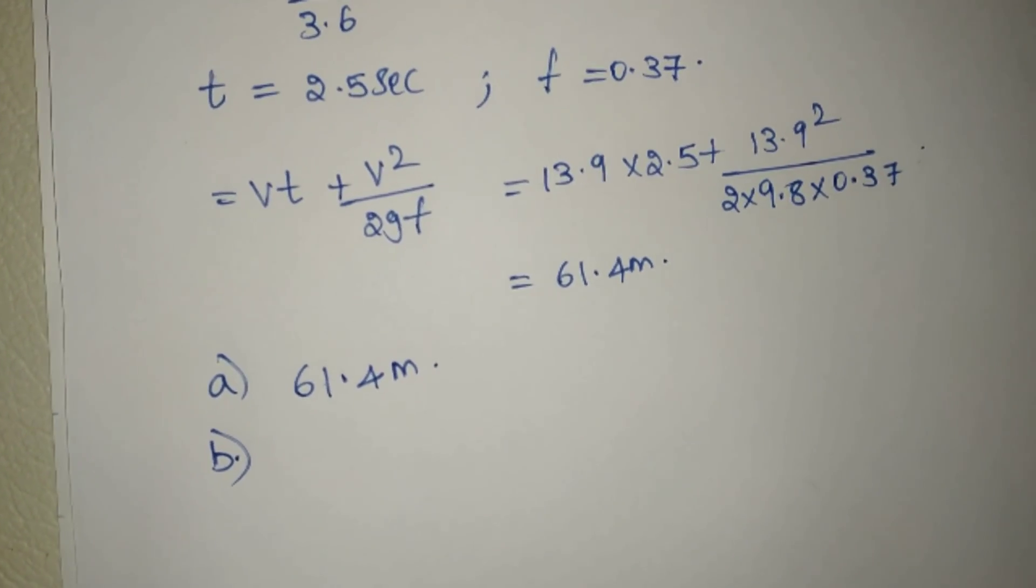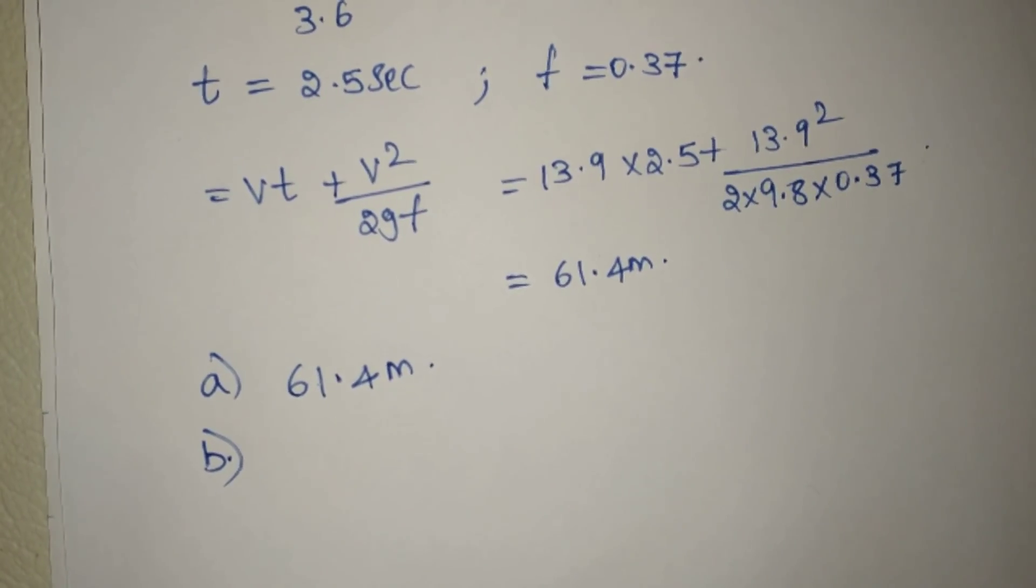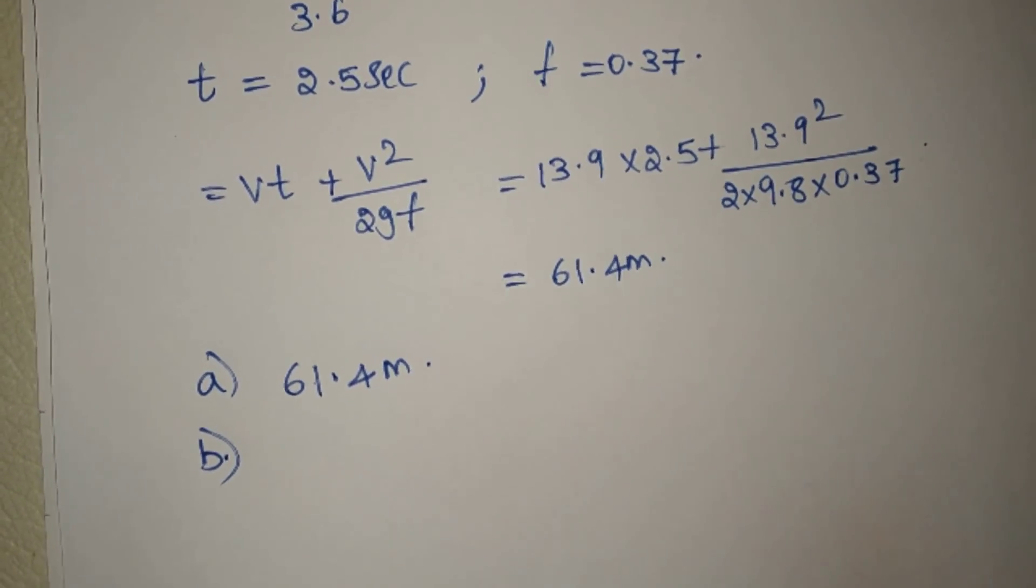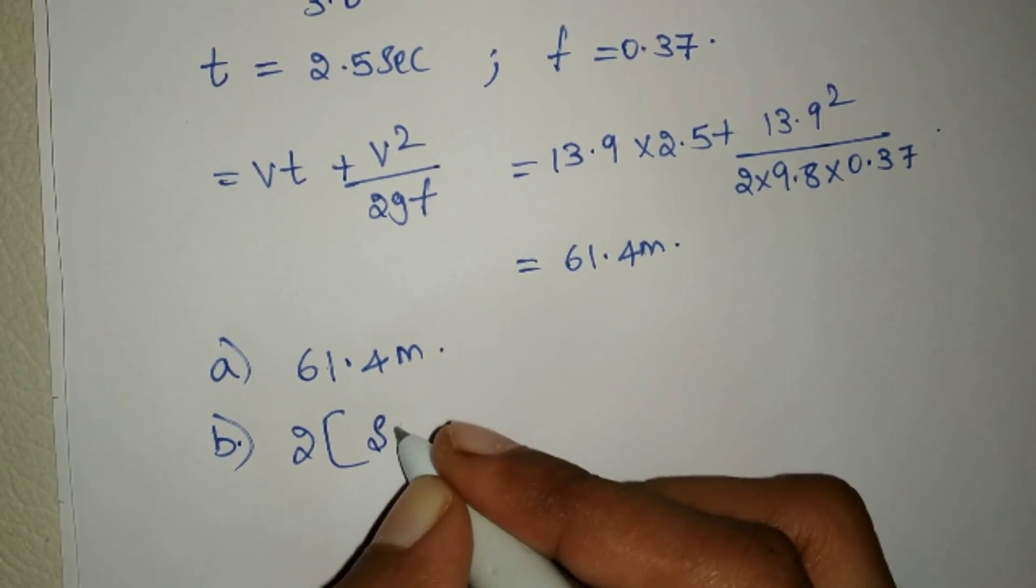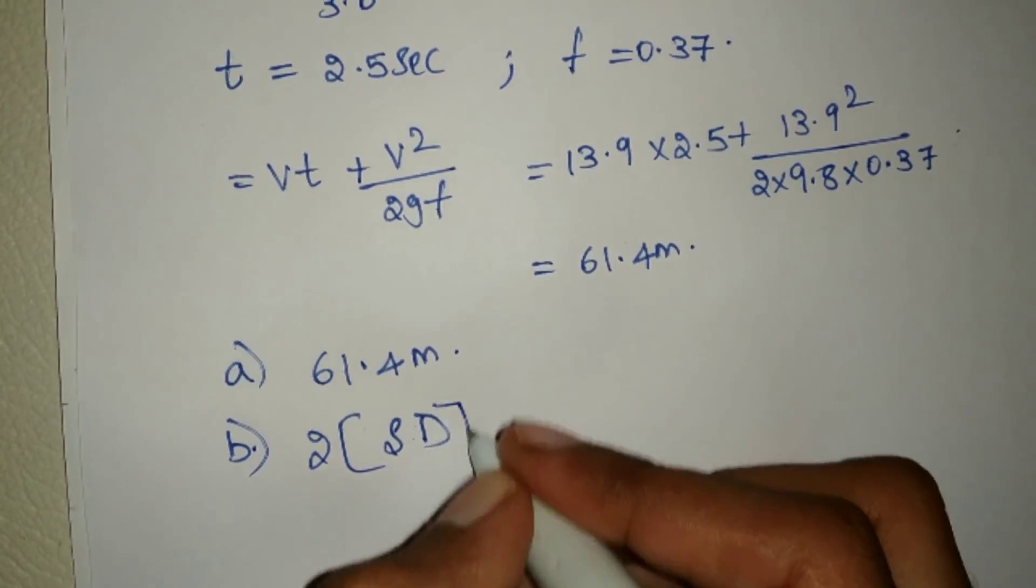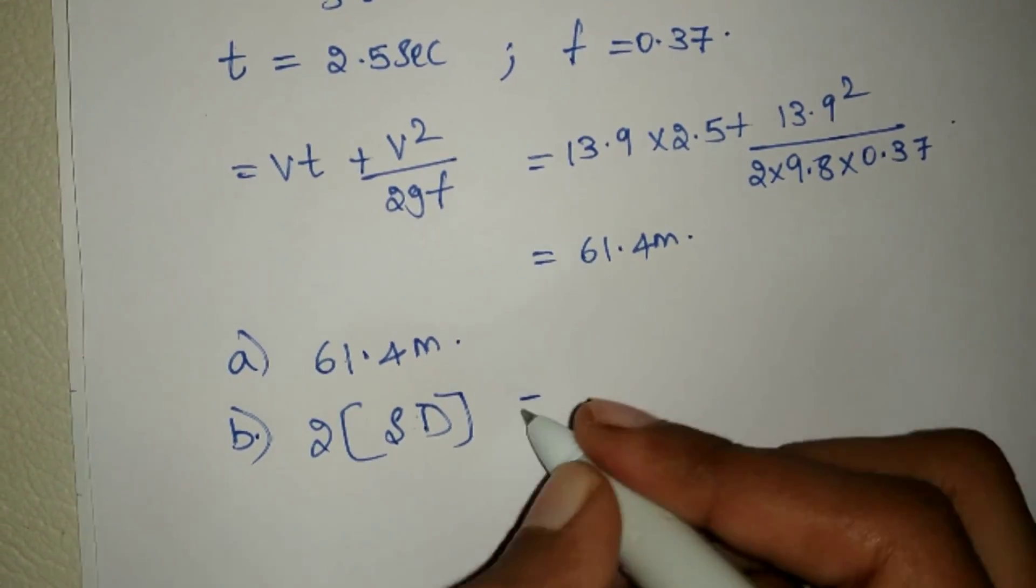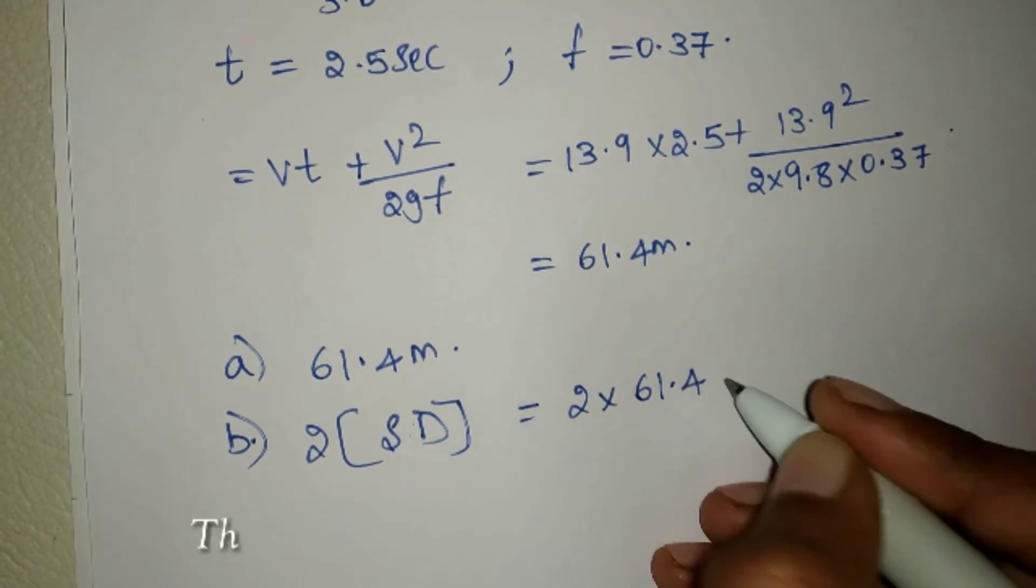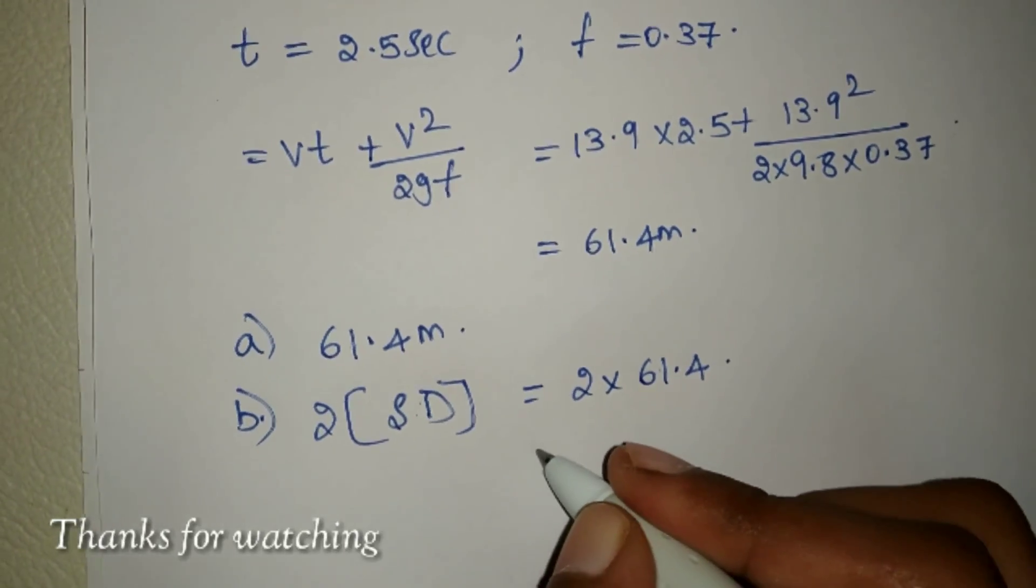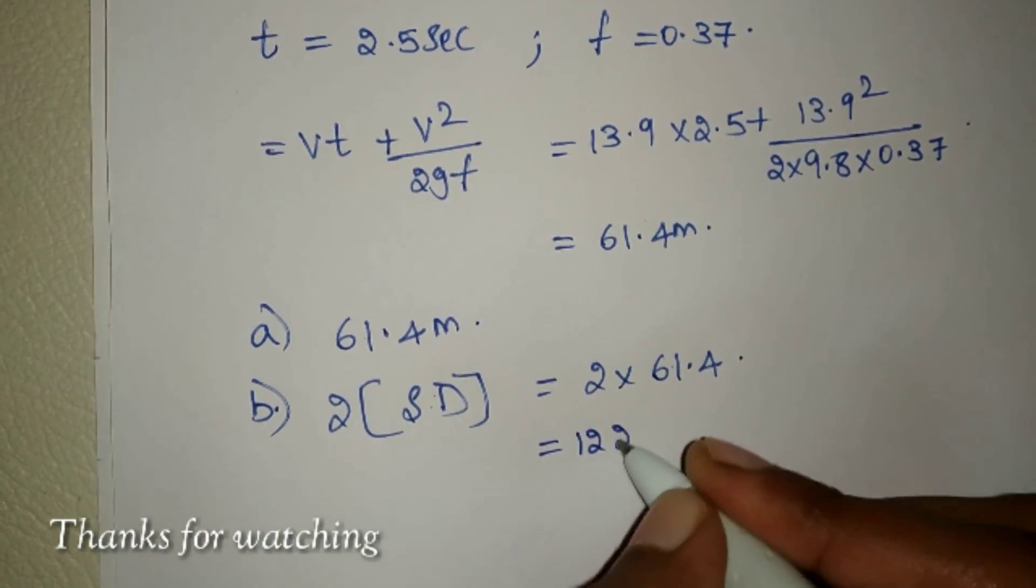Stopping sight distance on single lane road with two-way traffic will be multiplied with two, that is two into 61.4. We will get 122.8 meters. Thank you friends.